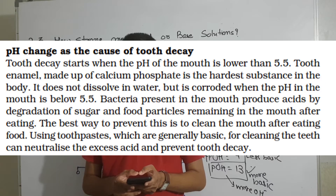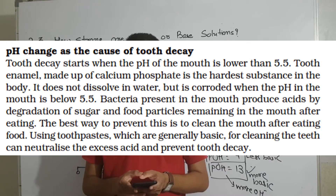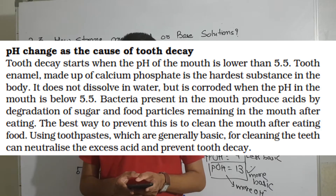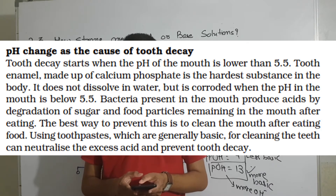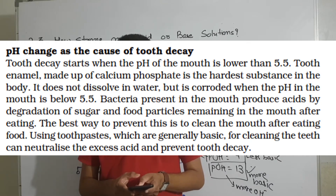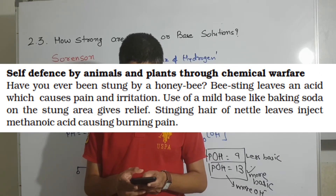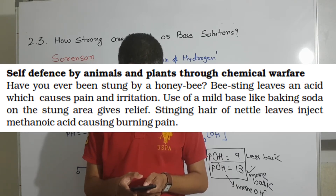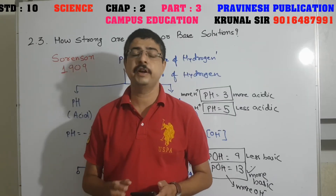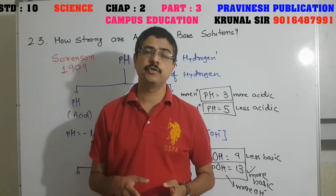Tooth decay starts when the pH of the mouth is lower than 5.5. Tooth enamel, made up of calcium phosphate, is the hardest substance in the body. It does not dissolve in water but is corroded when pH in the mouth is below 5.5. Bacteria present in the mouth produce acids by degradation of sugar and food particles remaining after eating. The best way to prevent this is to clean the mouth after eating using toothpaste, which is generally basic, to neutralize excess acid. Also, a bee sting leaves an acid causing pain; applying mild base like baking soda gives relief. Stinging hair of a nettle plant injects methanoic acid, causing burning pain.